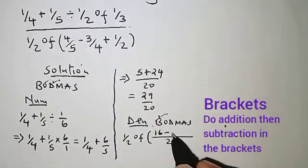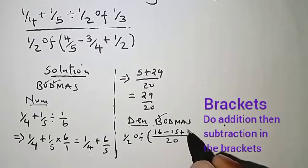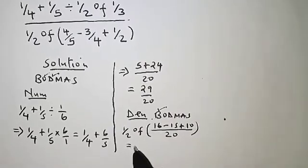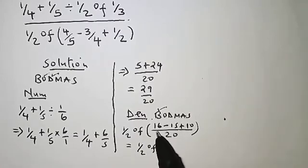Plus 2 into 20, 10 by 1, 10. So that should give us one half of 16 minus 15 plus 10.